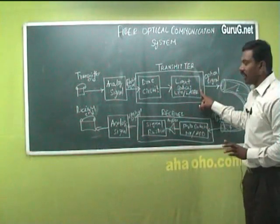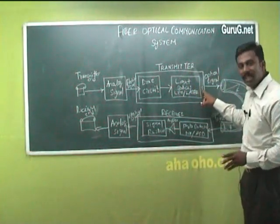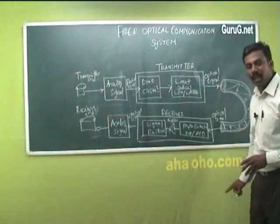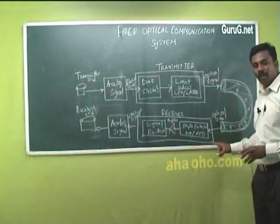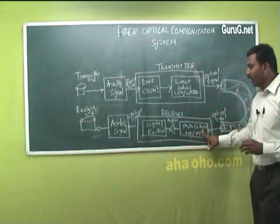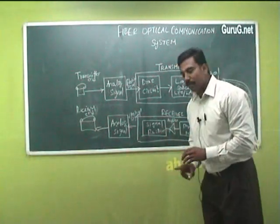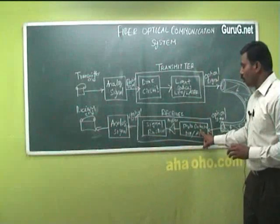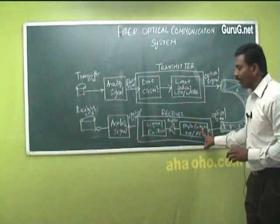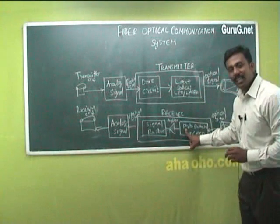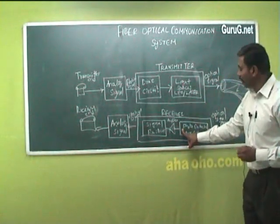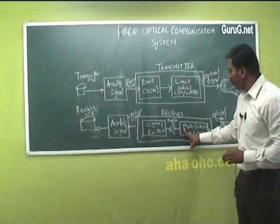Once the signals are converted into optical pulses, they are transmitted through the optical fiber to the receiver. At the receiver end, there is a photodetector and a signal restorer. The photodetector converts the optical signal back into electrical signals. However, the electrical signals detected by the photodetector may be weak.